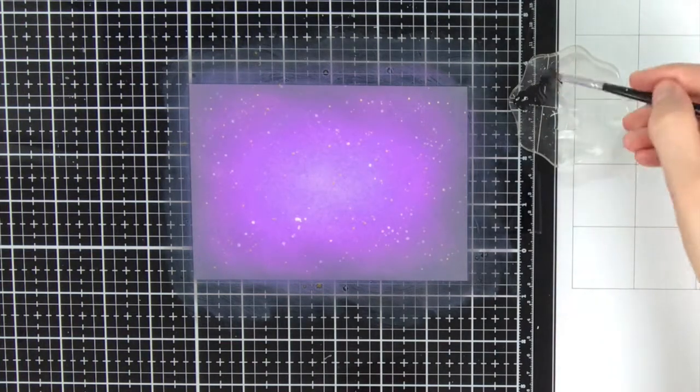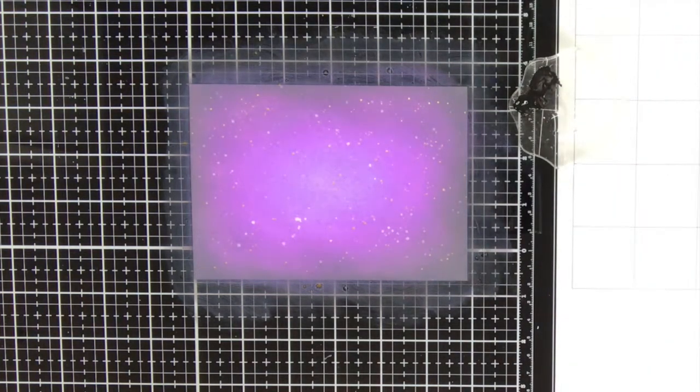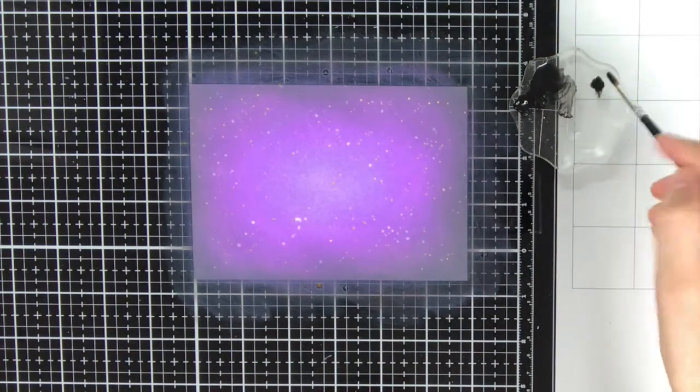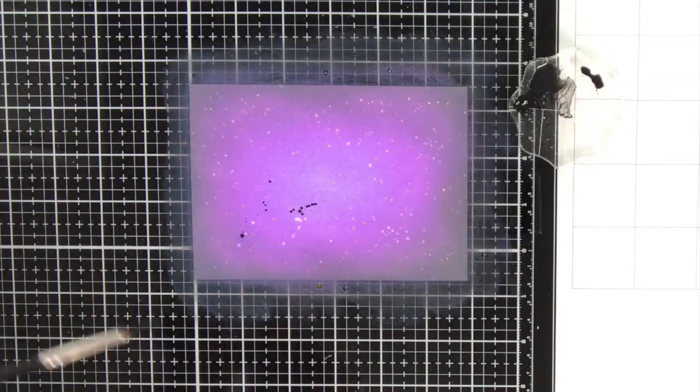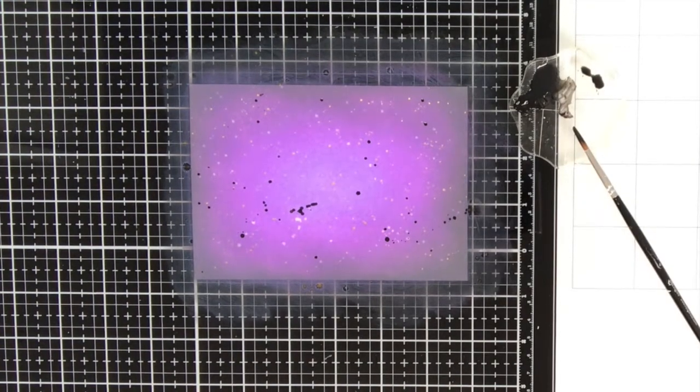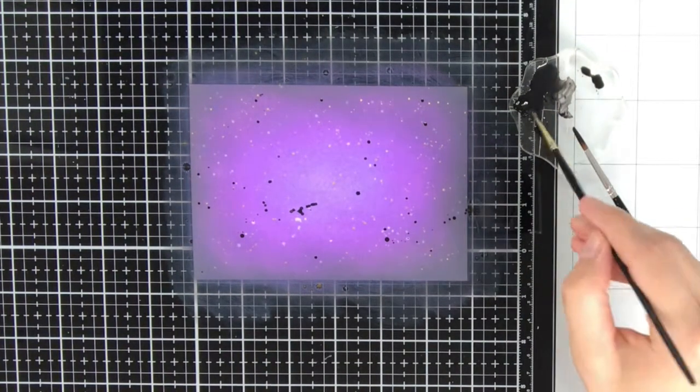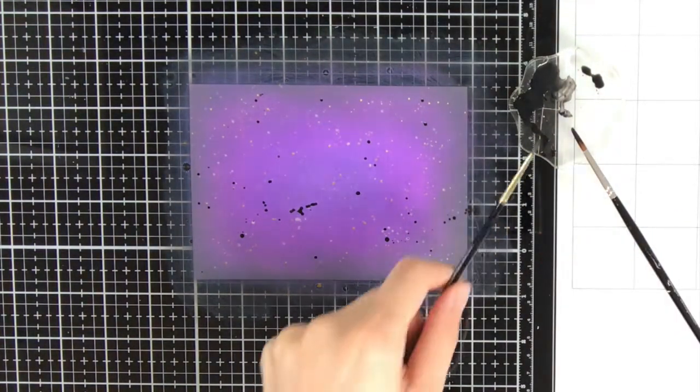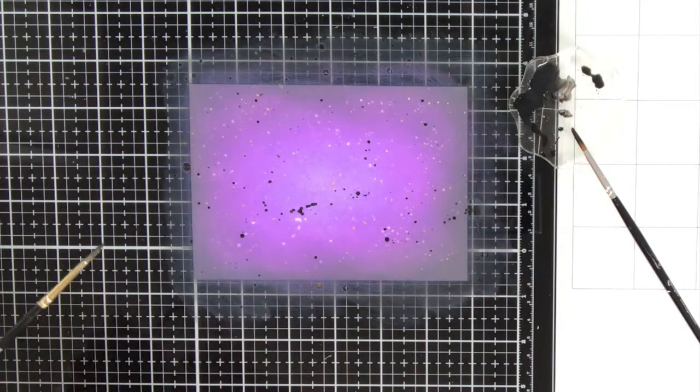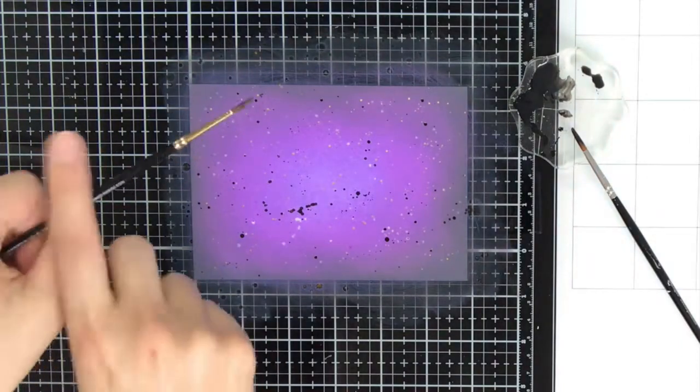To create more contrast with the lighter splatters, I also wanted to add some black splatters. I'm doing this by diluting some black acrylic paint with water. As you can see I put down too much water with the acrylic paint and got these big blobs, but it will be okay in the end. That's why I'm switching to a smaller paintbrush to get smaller splatters on the page.